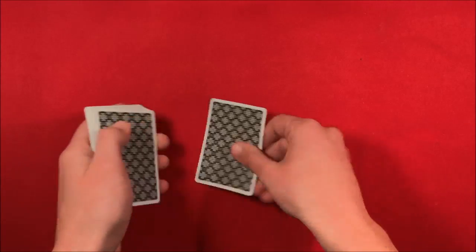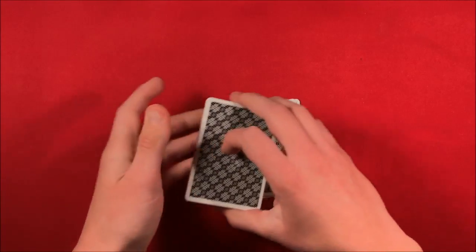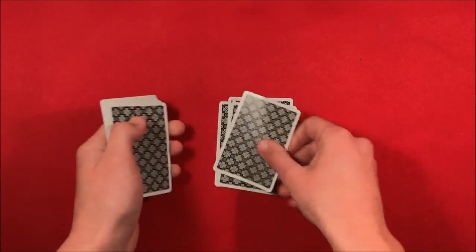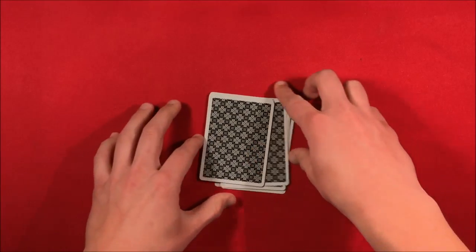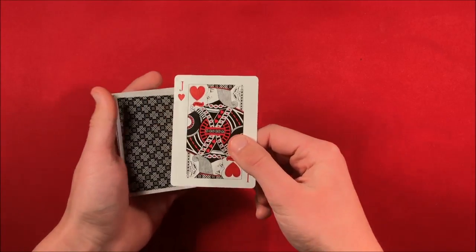You do 1, 2, 3, 4, 5, 6, 7, 8, 9, and now the top card is going to be whatever card was on the bottom. So in this case, it's going to be the jack of hearts.